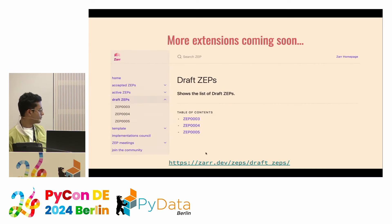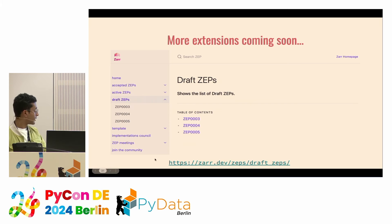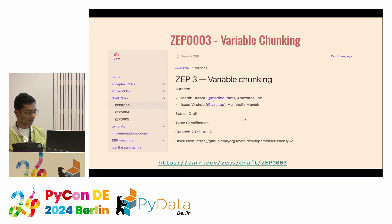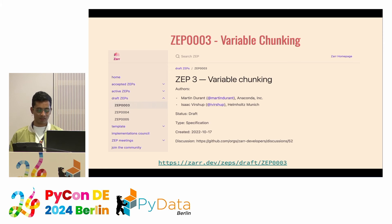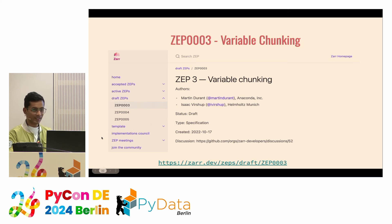More extensions are coming soon. If you want to see what extensions are currently proposed, you can go to the link provided. The most exciting upcoming extension is ZEP3 — variable chunking. Currently chunks are in a regular shape with equal sizes, but variable chunking will allow chunks of various sizes. This has various applications in fields like genomics and transcriptomics. The proof of concept is ready and we are waiting for the voting phase to pass before it's included in the Python implementation of Zarr.